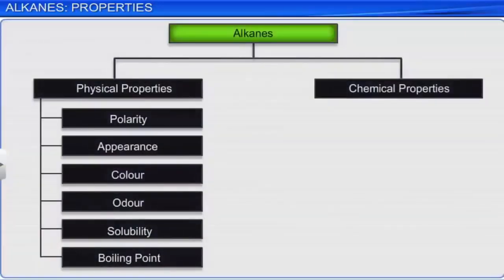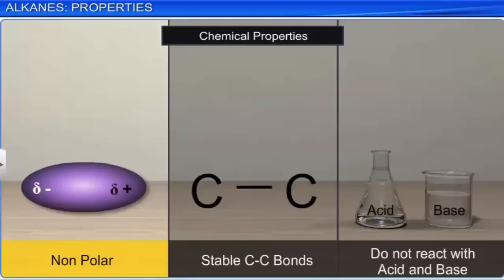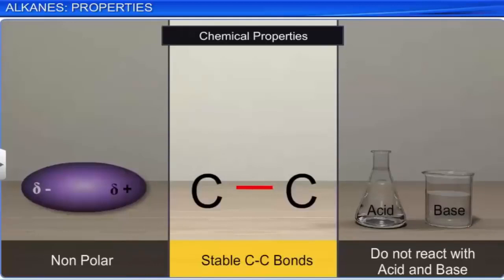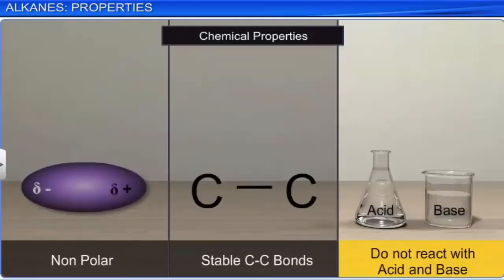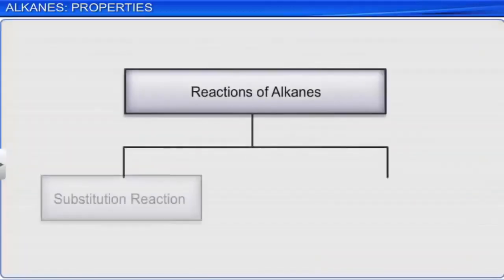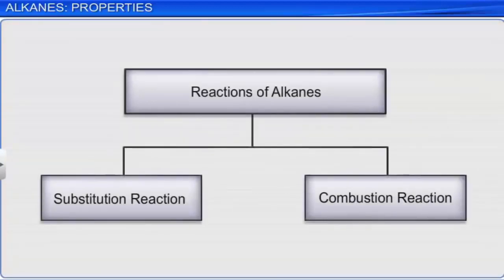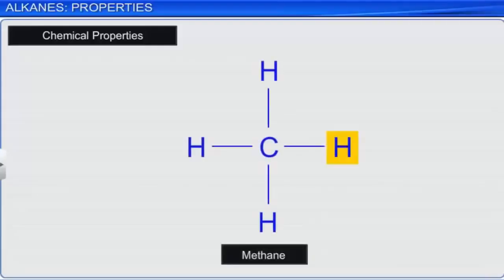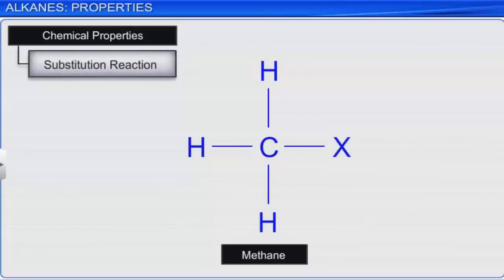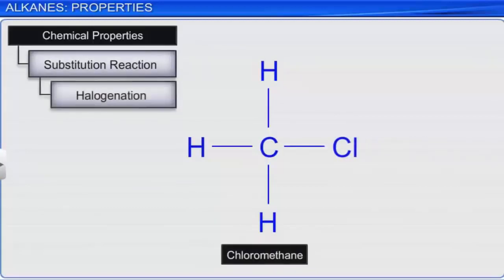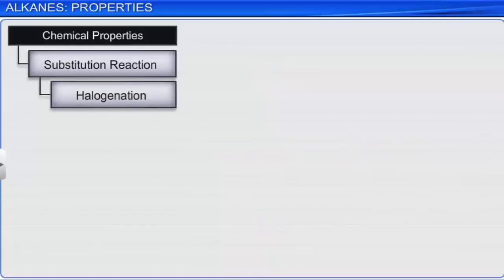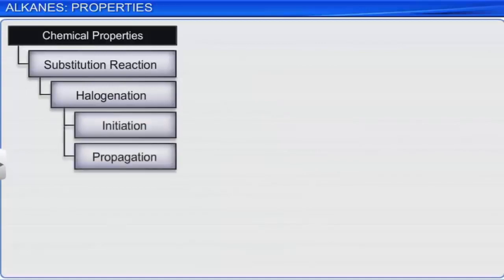Now let's look at the chemical properties of alkanes. Alkanes are non-polar; their carbon bonds are quite stable, and so they do not easily react with acids and bases. However, they do undergo substitution reactions and combustion reactions under certain conditions, as their carbon atoms are in strongly reduced states. During substitution reactions, the hydrogen atom of an alkane is substituted. When the element substituting the hydrogen is a halogen, the reaction is called halogenation. It involves three steps: initiation, propagation, and termination.